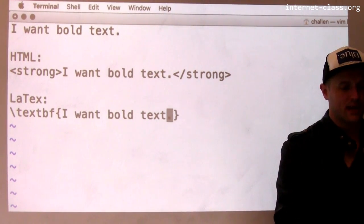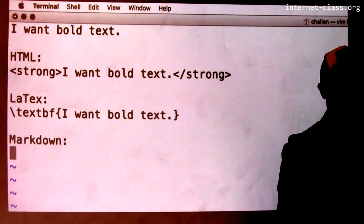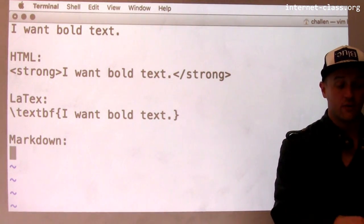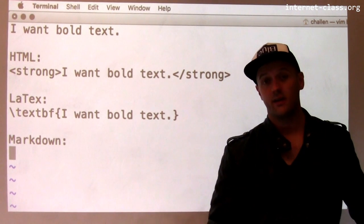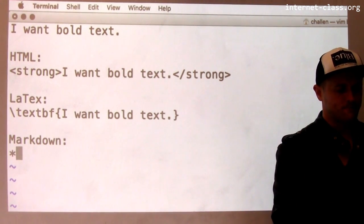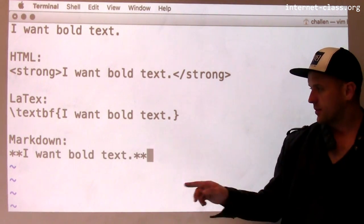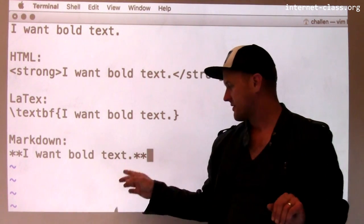Let's look at a couple of other pretty common text-based markup languages. There's something called Markdown, which is quite common online. You can use Markdown to write readme files on GitHub and in a variety of other places. It's pretty nice. In Markdown, here's how you get bold text. Double star, I want bold text, double star.